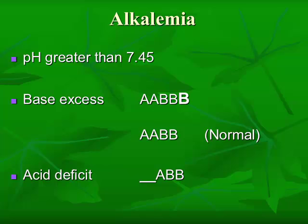In alkalemia, our pH is greater than 7.45. We have a decrease in the hydrogen ion concentration and our pH is higher than normal. We have an excess of base — AABBB. If we have an acid deficit causing the alkalemia, we're missing acid, so we only have AABB.